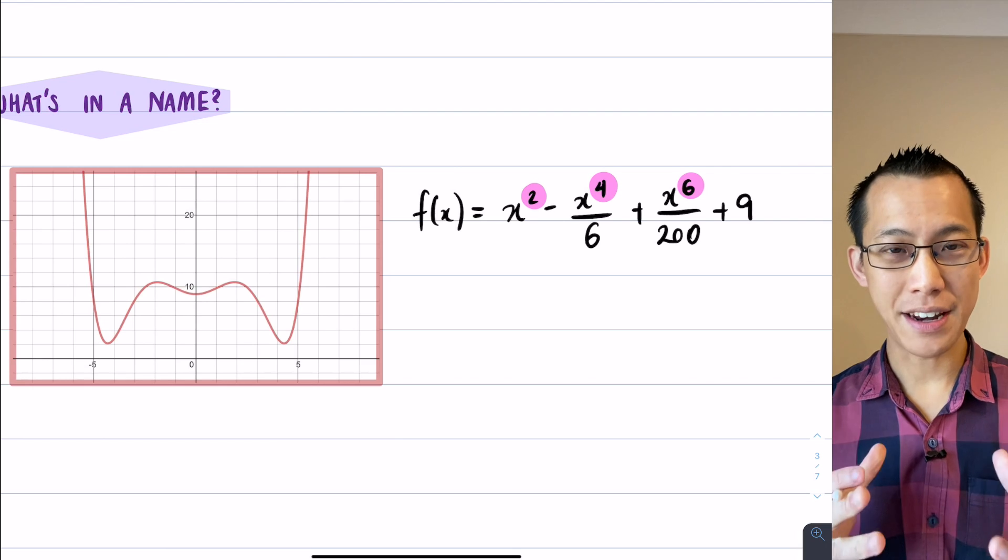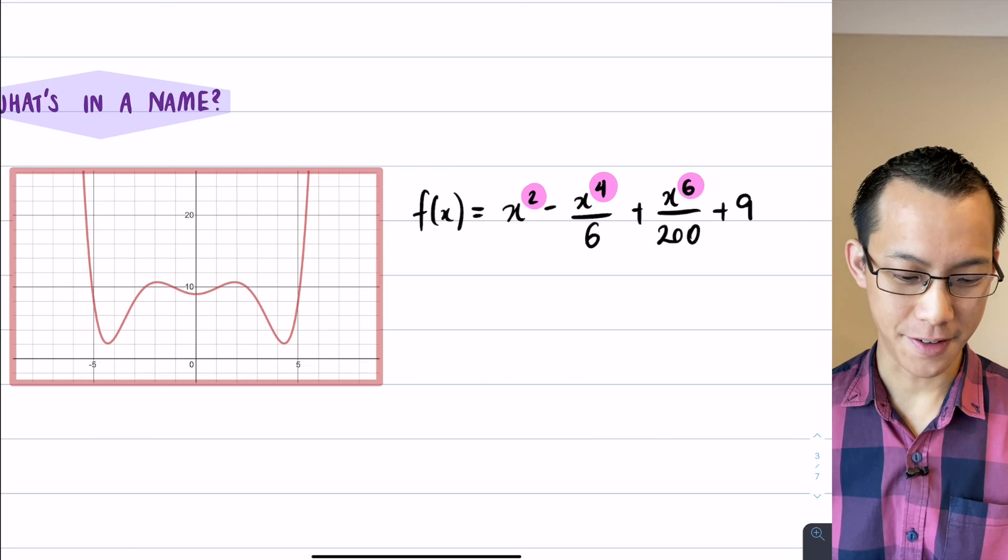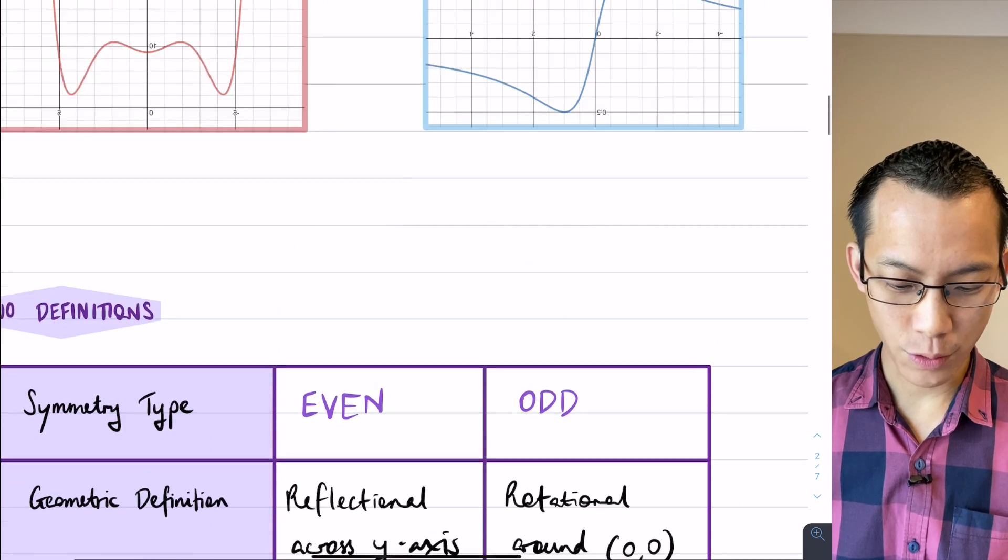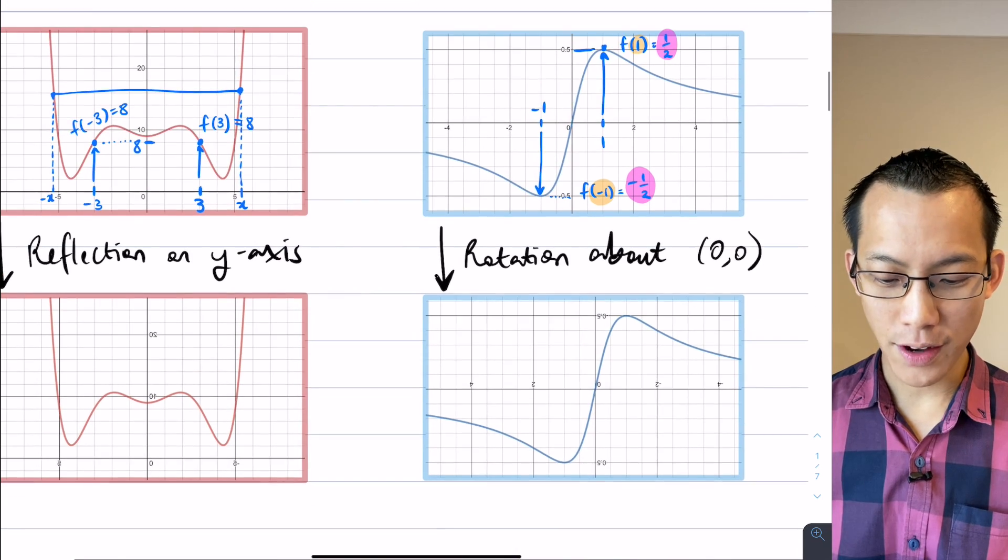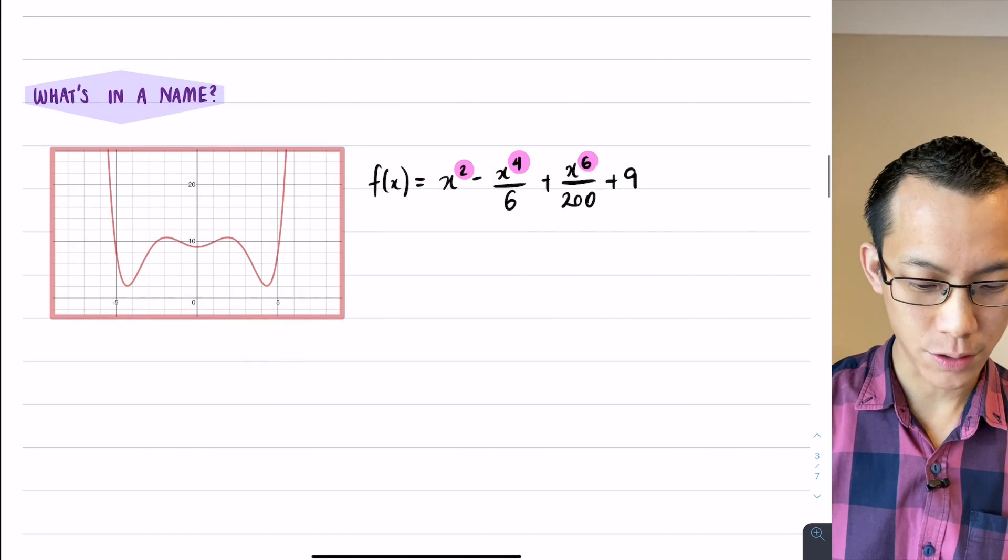I knew that this would be an even function because all of the powers are even, and correspondingly we'll get to this later on, to get an odd function I'm going to use odd powers. Now I can see quick examples of this, right?